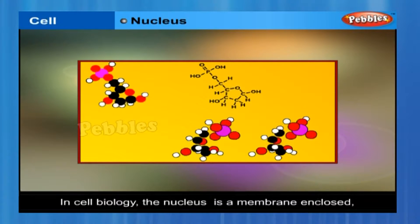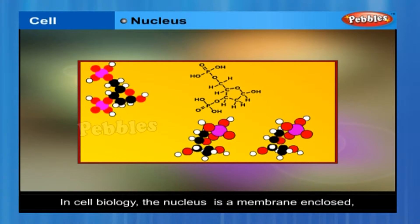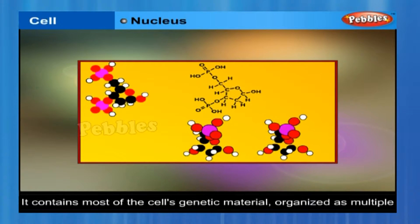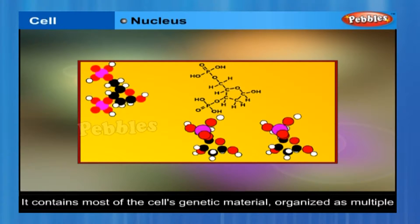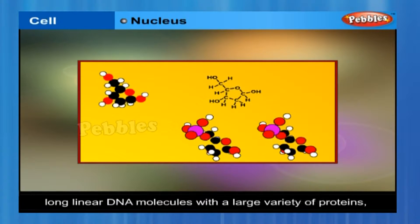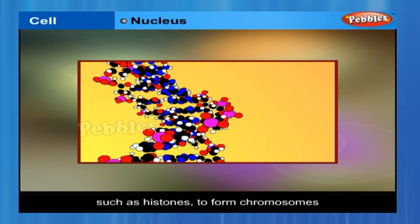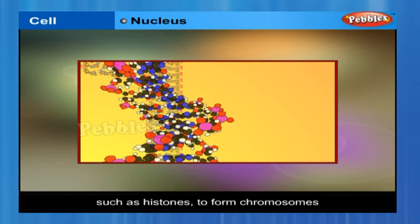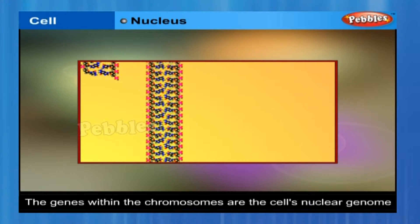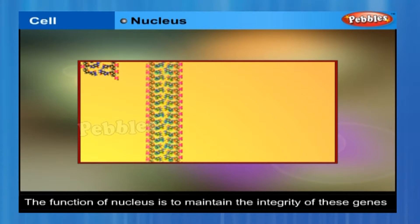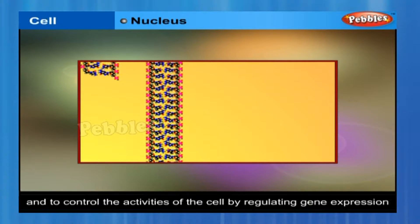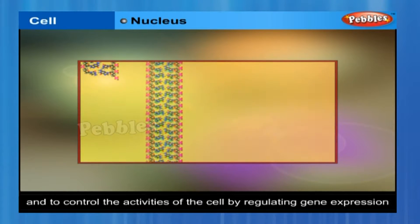In cell biology, the nucleus is a membrane-enclosed organelle found in all eukaryotic cells. It contains most of the cell's genetic material, organized as multiple long-linear DNA molecules in complex with a large variety of proteins, such as histones, to form chromosomes. The genes within these chromosomes are called the cell's nuclear genome. The function of the nucleus is to maintain the integrity of these genes and to control the activities of the cell by regulating gene expression.